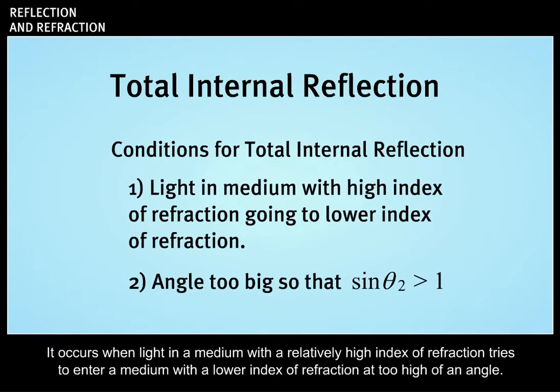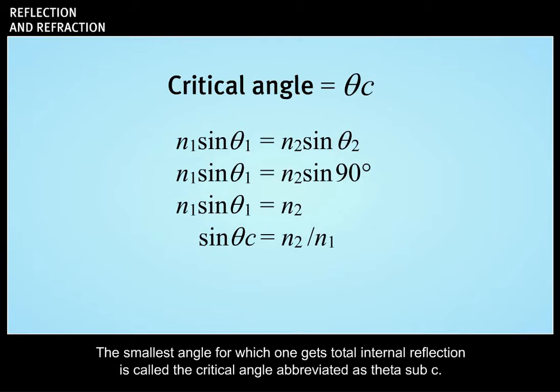This is known as total internal reflection. It is so called because all of the light is reflected and it happens inside a medium with relatively high index of refraction. It occurs when light in the medium with a relatively high index of refraction tries to enter a medium with a lower index of refraction at too high of an angle.